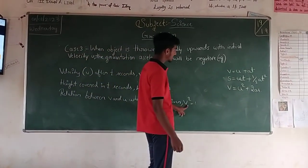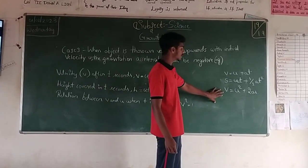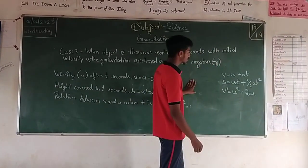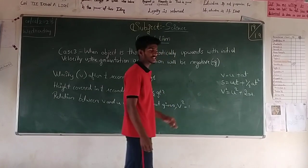In this expression, we have V squared equals U squared minus 2GH.